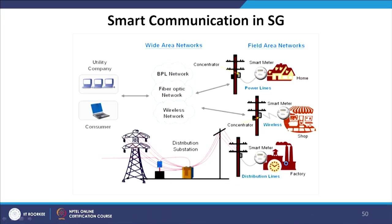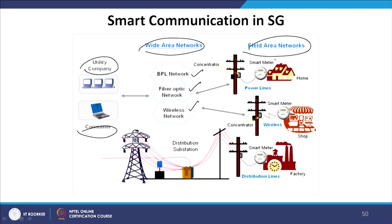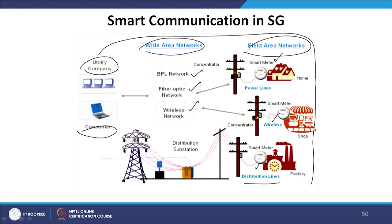In the smart communication architecture of a smart grid, the utility company connects to consumers through wide area networks — which could be BPL, fiber optic, or wireless networks. Field area networks connect to smart meters, which can be installed in power lines. The whole utility can connect to homes, shops, and factories through smart meter data using both field area networks and wide area networks, enabling communication between users and the source to make the grid smarter.